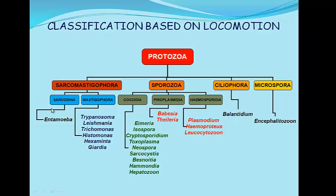To summarize: the Sarcodina parasites move by amoeboid movement or pseudopodia. Mastigophora move by flagella. Coccidia, Pyroplasmidia and Hemosporidia move by gliding. Ciliophora moves by cilia. And Microspora does not move.